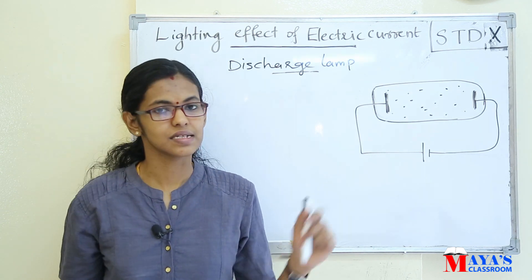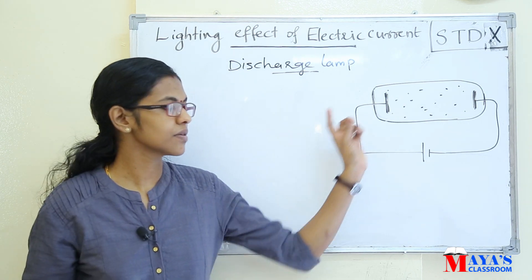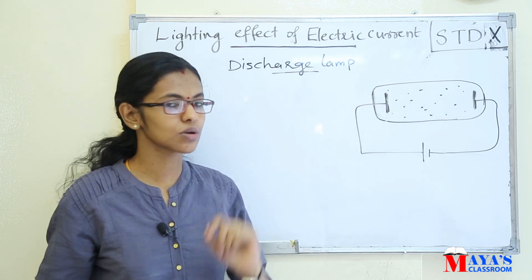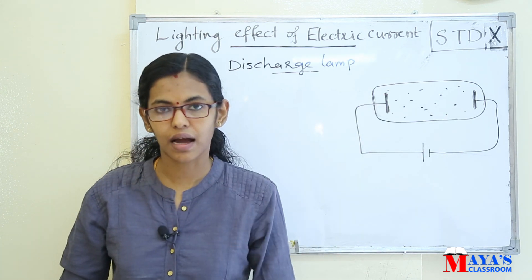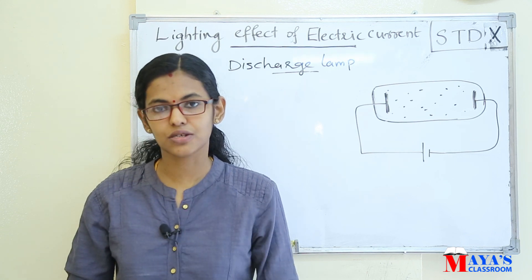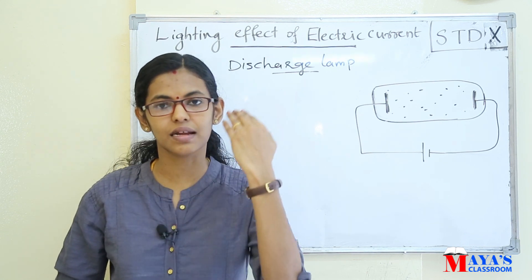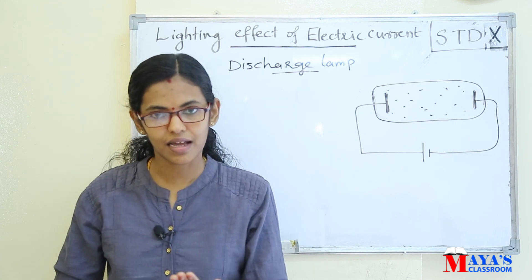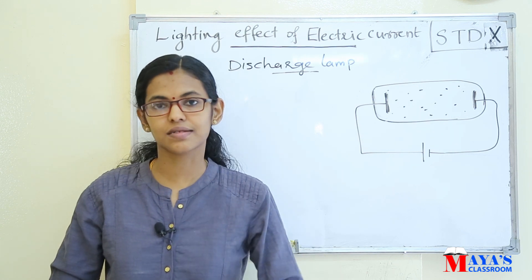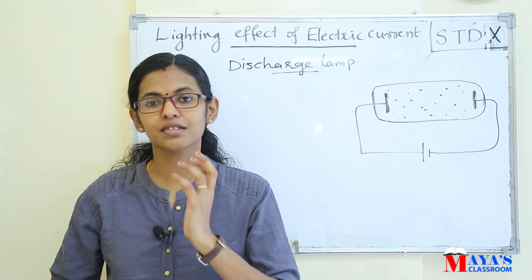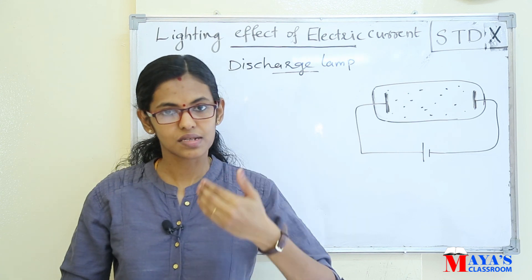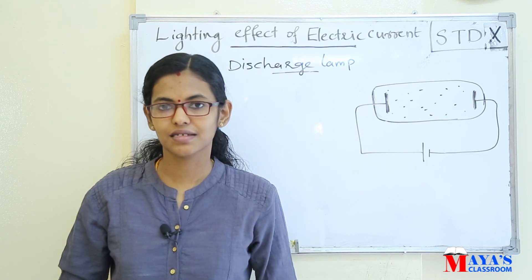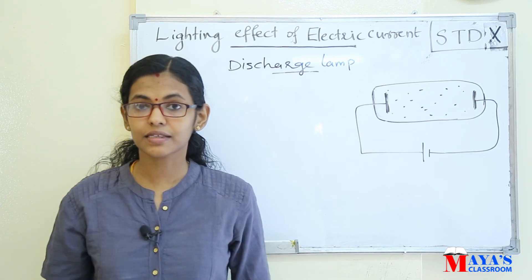This is the working of a discharge lamp. There is a glass tube with a suitable gas and two electrodes at high potential. Initially, atoms are un-ionized. When ionized, they collide and reach a higher energy state. The higher energy state is not stable, so atoms return to the original ground state. When they return to the original state, they release light energy.